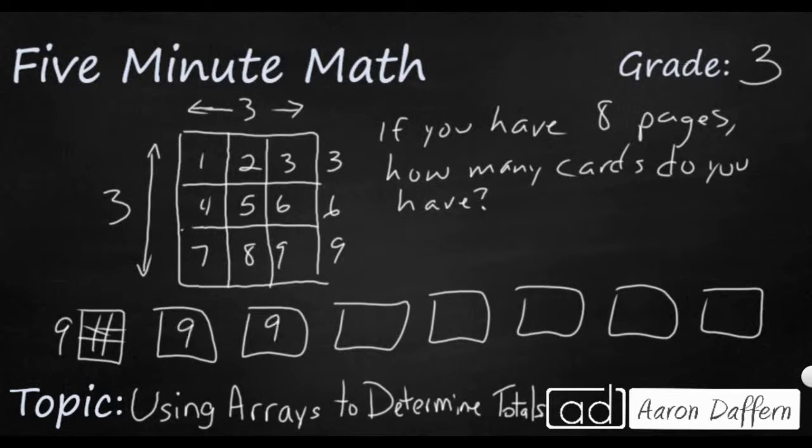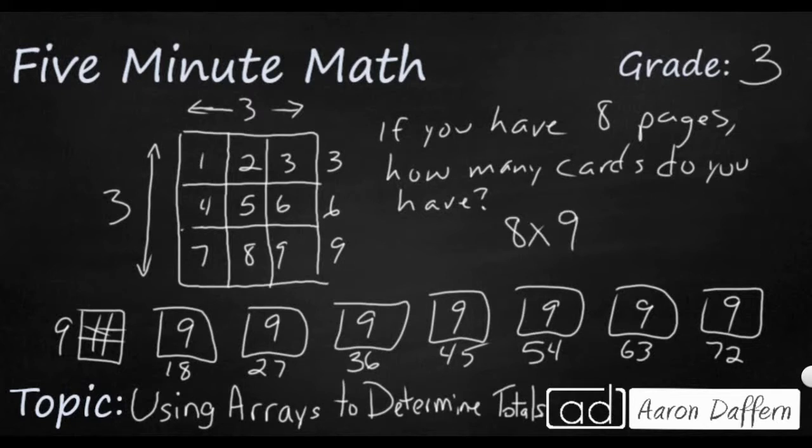So we're going to skip count by nines. Or if you know your multiplication fact, you can already jump to the answer. But nine plus another nine is 18. Plus another nine is 27. Another nine is 36. This is why skip counting is so important. 45, 54, 63, and 72. So if I wanted to write this as a number sentence, I would say eight groups of nine—eight pages with nine each—and that is 72.